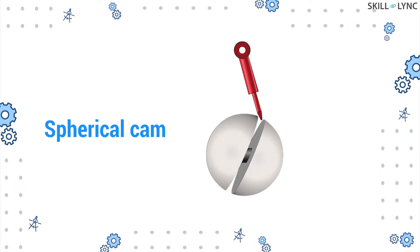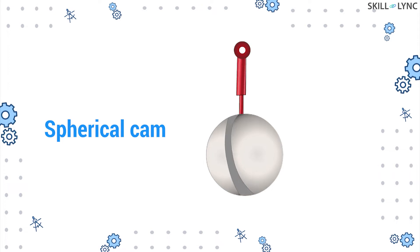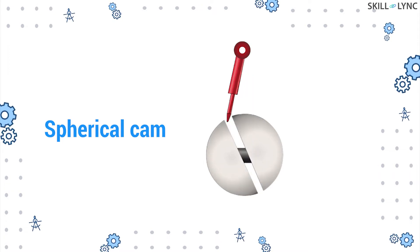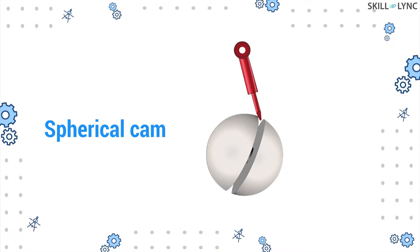And now we have the spherical cam where the cam is in the shape of a sphere provided with a groove over which the follower moves. Here, the oscillation of the follower will be perpendicular to the axis of rotation of the sphere.